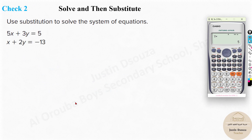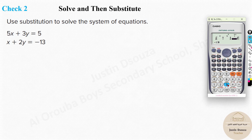For the next problem, please pause and try it yourselves. The first equation has coefficients 5, 3, 5 and the second equation has coefficients 1, 2, 13. Be careful — sometimes questions trick you by listing y before x. Always make sure you enter x coefficients first and y coefficients second. The answer here is x equals 7 and y equals negative 10, which is correct.